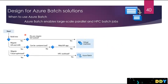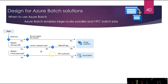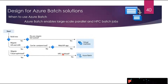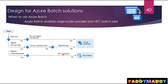Azure Batch enables large-scale parallel and high-performance computing — HPC — that can run batch jobs with the ability to scale to tens, hundreds, or even thousands of virtual machines in the backend to run those tasks.